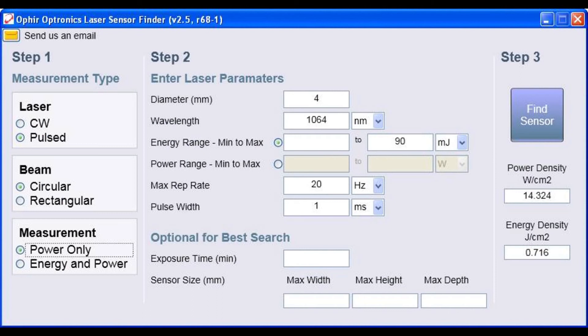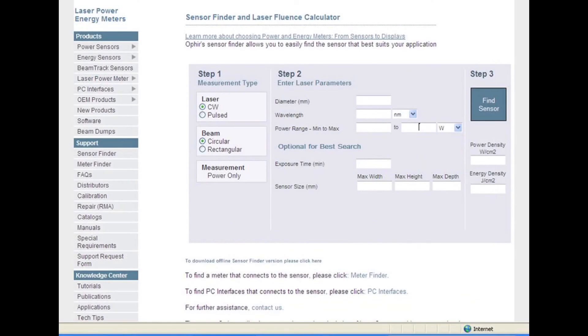No need to panic, Ophir offers a tool called the sensor finder, which does most of the thinking for you and offers the correct solutions for your laser. You can find it on our website. And of course, your local Ophir representative will be more than happy to help you with your particular application. We hope this short video will help put things in order for you, so you'll know how to begin and what questions to ask.